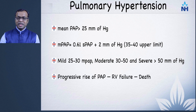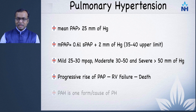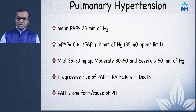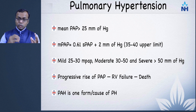As pulmonary arterial pressure increases, there is progression of RV failure which eventually leads to death. Also remember that pulmonary arterial hypertension is not the same as pulmonary hypertension — pulmonary hypertension is a large group of disorders, within which pulmonary arterial hypertension is one classification.